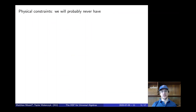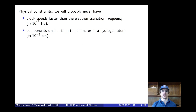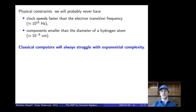All these points lead us to the question of why bother? Why spend so many resources building a quantum computer when classical computers are so fantastic and always getting faster, even at an exponential rate? Well, there are some real physical constraints at play. We'll probably never have clock speeds faster than the electron transition frequency — that's 10 to the 15th hertz — and we'll probably never have circuit components smaller than the diameter of a hydrogen atom, about 10 to the negative 8 centimeters.